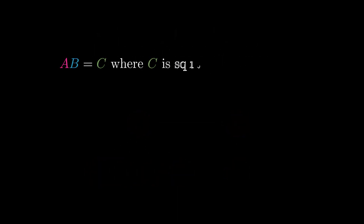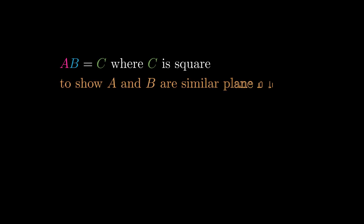Let ab equal c, where c is a square. We'll show that a and b are similar plane numbers.